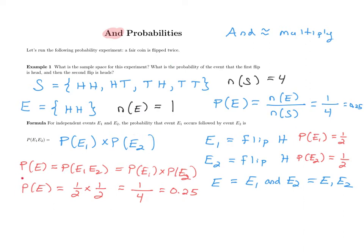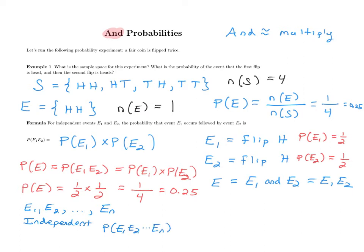This is a much faster approach than writing out a sample space, counting elements, defining a subspace, and then dividing. We can now generalize: this formula holds true not just for two events, but for any number of independent events E1, E2, through EN. As long as they all have no effect on one another, P(E1 and E2 and ... and EN) = P(E1) × P(E2) × ... × P(EN).